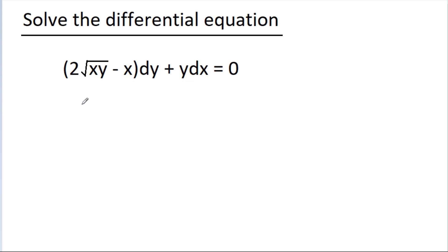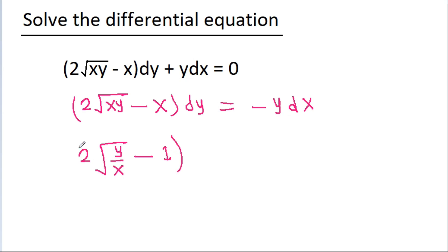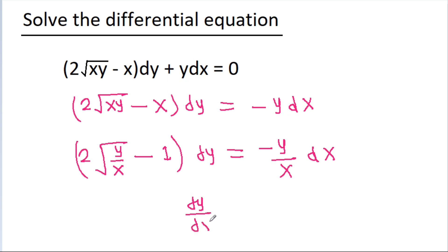We can get 2√(xy) minus x dy is equal to minus y dx. We have xy, x and y. So if we divide by x, then we can get 2√(xy)/x will be √(y/x), minus x/x will be 1, dy is equal to minus y/x dx.